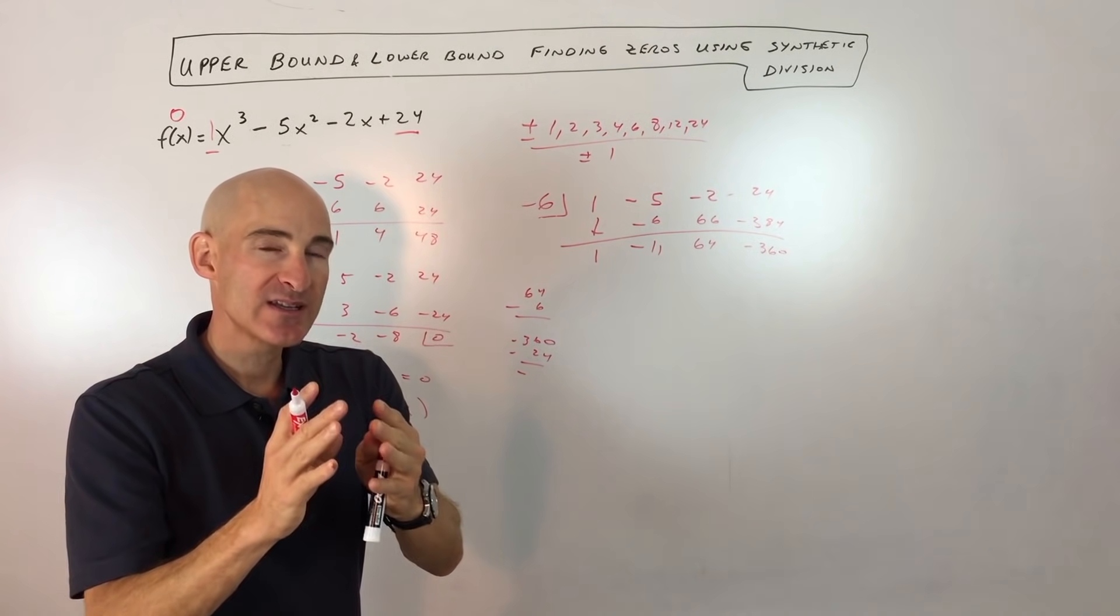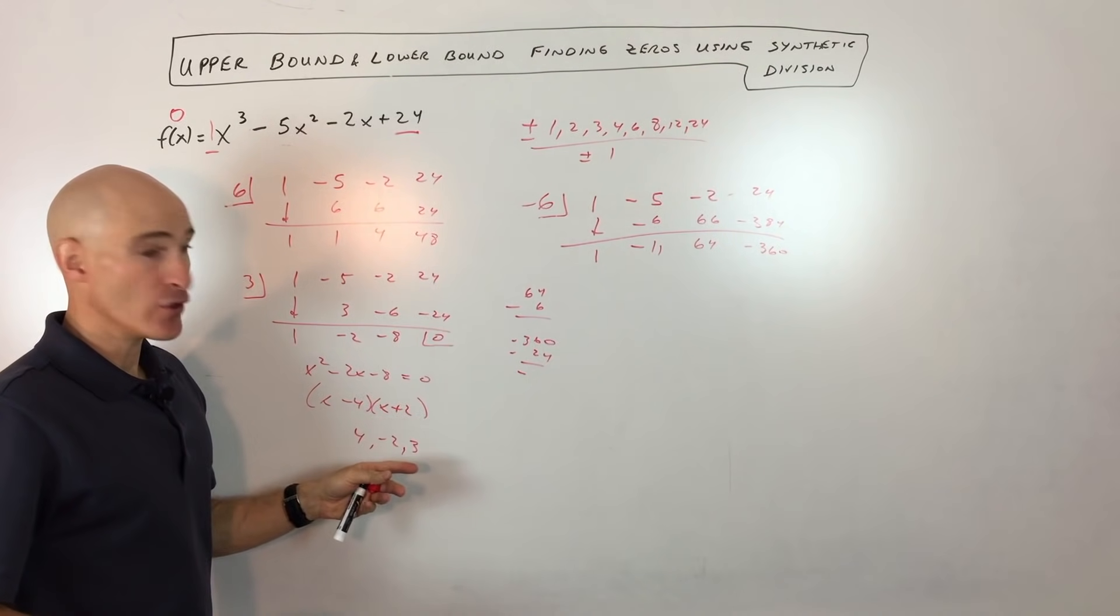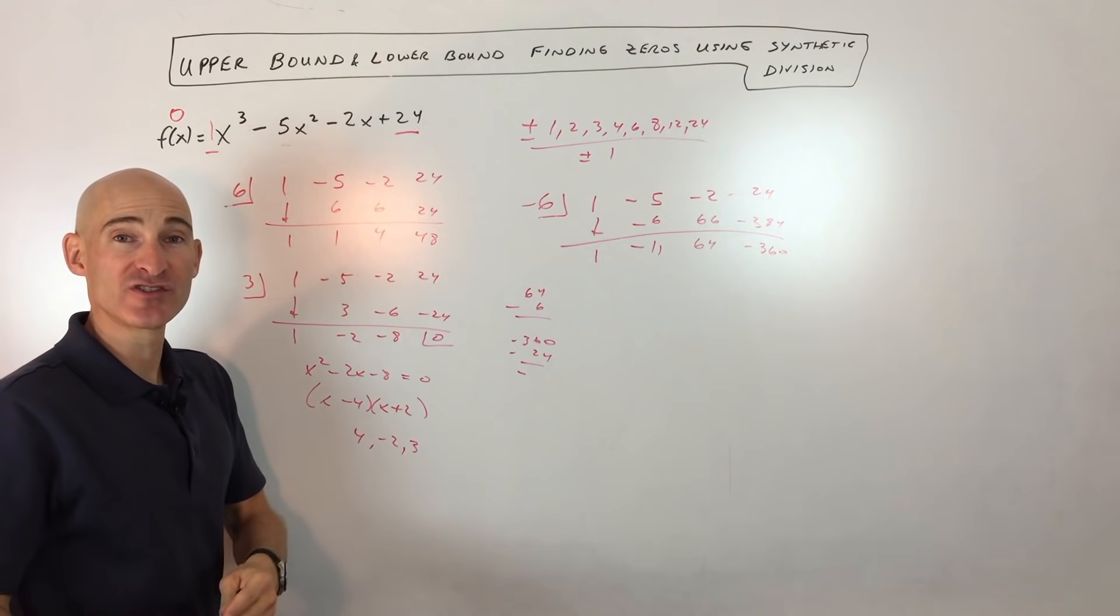So it's a way of narrowing down when you're doing the synthetic division, what your possible zeros are so that you can factor this and graph it and find all the zeros and so on.